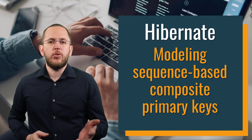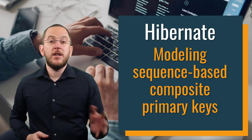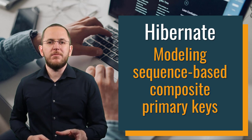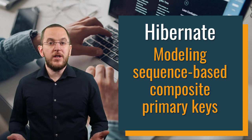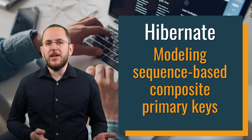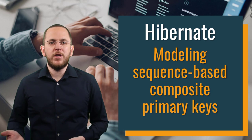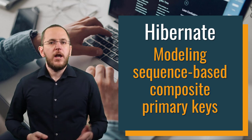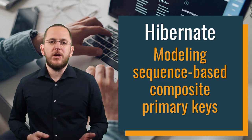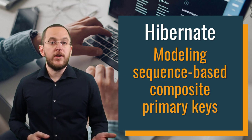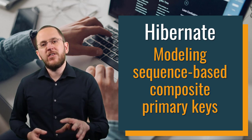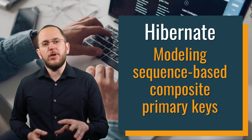If this counter gets incremented independently, most developers want to use a database sequence for it. On the database level, you can model this easily. Your primary key definition references all columns that are part of the primary key, and a sequence is an independent object. You request a value during your insert operation and set it as the value of your counter.